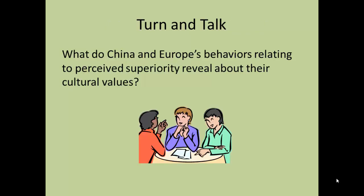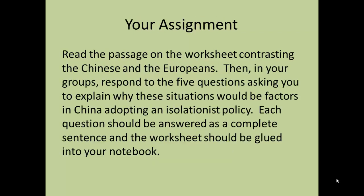Turn and talk: discuss what China and Europe's behaviors relating to perceived superiority reveal about their cultural values. Your assignment is to read the passage on the worksheet contrasting the Chinese and the Europeans, then in your groups respond to the five questions asking you to explain why these situations would be factors in China adopting an isolationist policy. Each question should be answered in a complete sentence and the worksheet should be glued into your notebook.